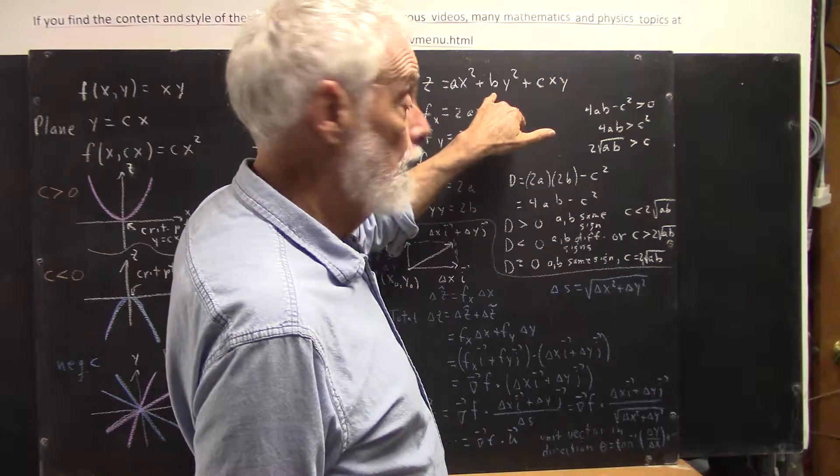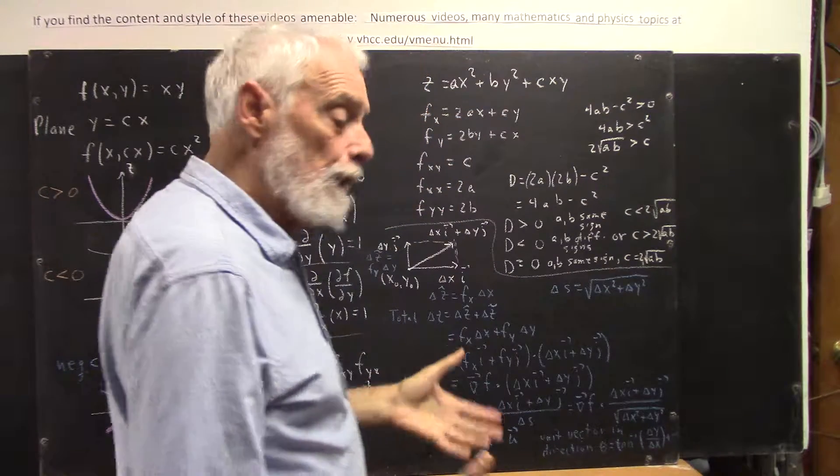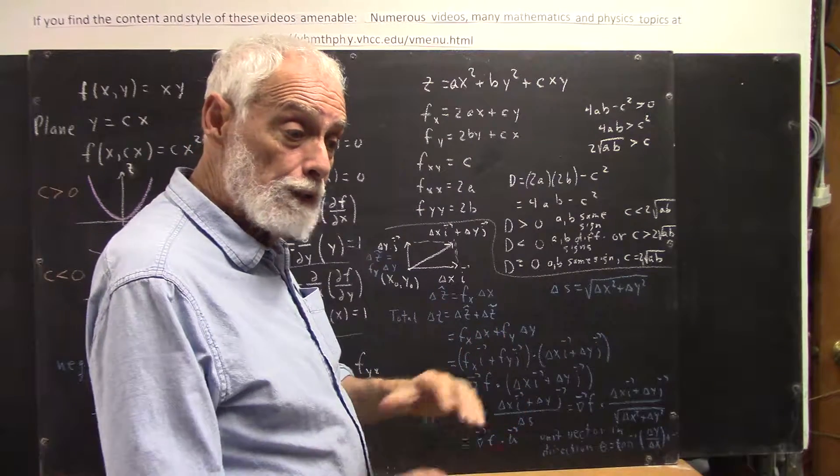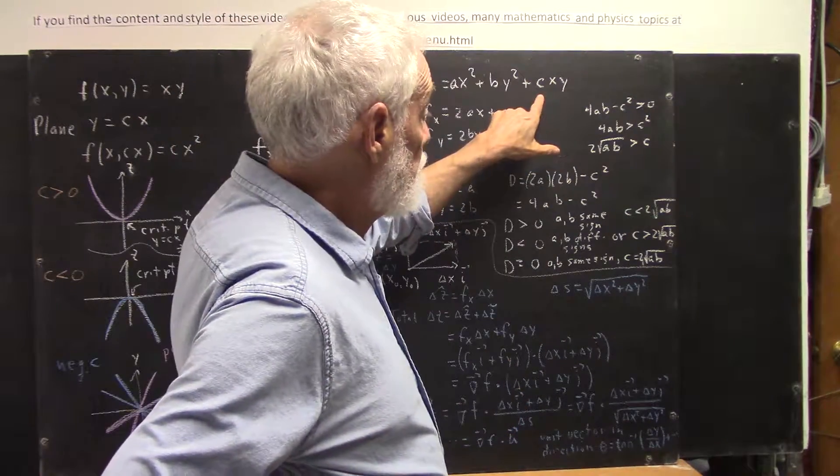So if a and b have the same sign, it's possible to get a relative maximum or relative minimum, provided c isn't too big.